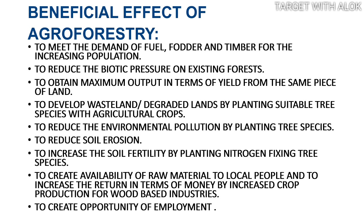The fourth point is to rehabilitate wasteland and degraded land by planting suitable tree species along with agricultural crops. On lands that have become barren or degraded where normal cultivation is not possible, agroforestry can be practiced. First, forest trees are grown there, which slowly help the land regain its nutrients, after which agricultural cultivation can resume.